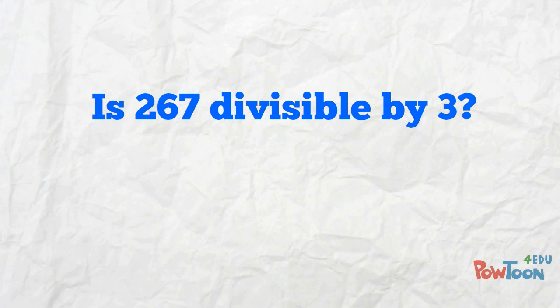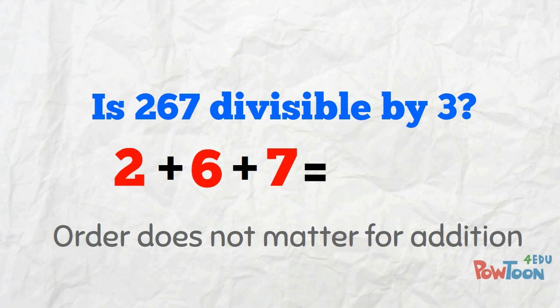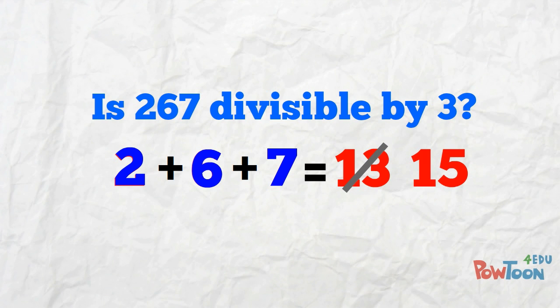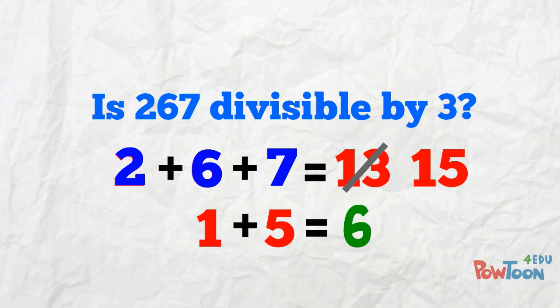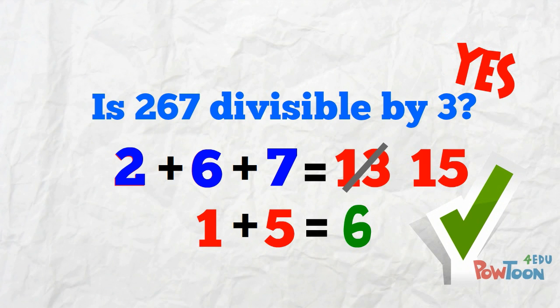Is 267 evenly divisible by 3? Split it up to add the digits: 2 plus 6 plus 7. The order we add numbers doesn't make a difference, so I add it up in a way that makes sense to me — 6 plus 7 is 13, plus 2 is 15. And from 15, 1 plus 5 is 6. So 267 IS evenly divisible by 3 — it HAS got 3 as a factor!